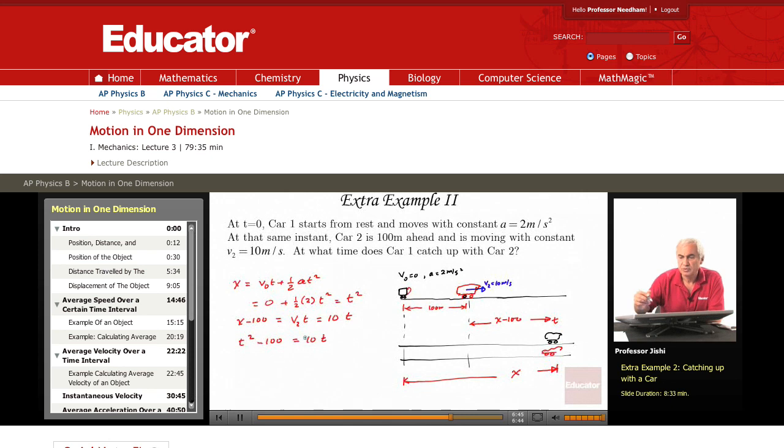Which means that t square minus 10 t minus 100 is equal to 0. So t equals 10 plus or minus square root of 10 square, which is 100, minus 4 times 1 times minus 100, so plus 400, over 2.